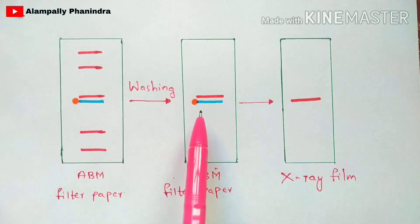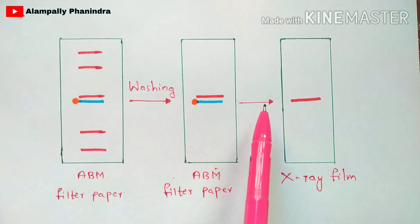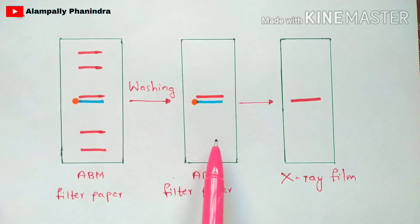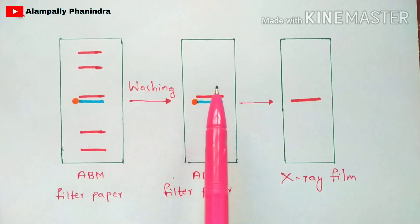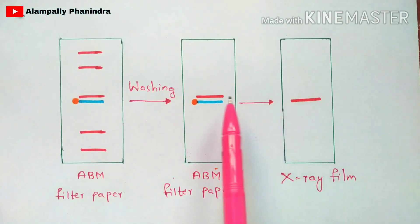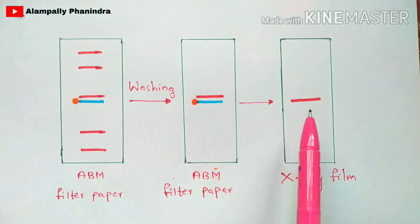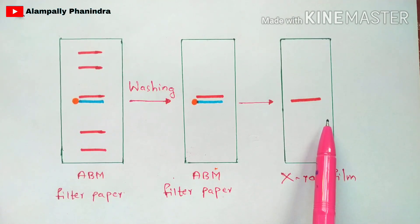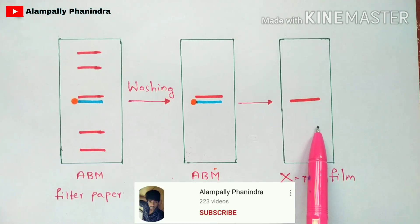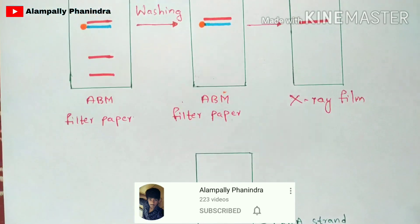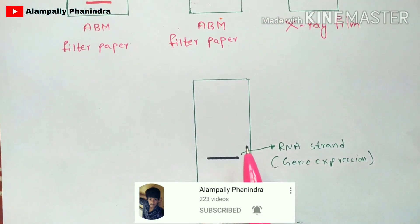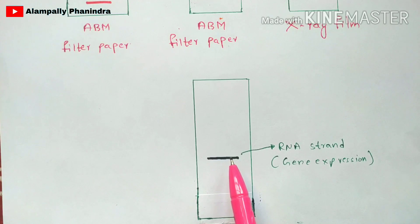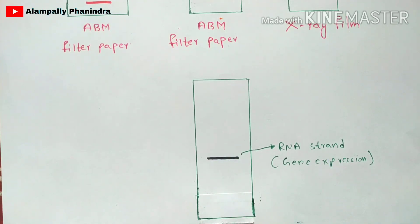After removing the probe, an X-ray film is placed on the ABM filter paper, which contains the detected RNA strand. The strand present on the ABM filter paper gets transferred to the X-ray film. The process of autoradiography is then performed on the X-ray film, such that the RNA strand of interest is detected and appears as a black band. This black band represents the gene expression of the RNA strand extracted based on our interest.